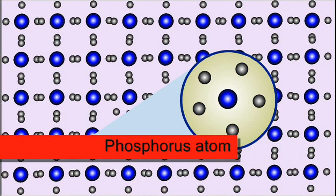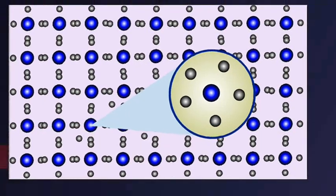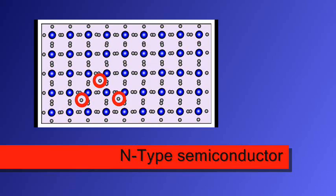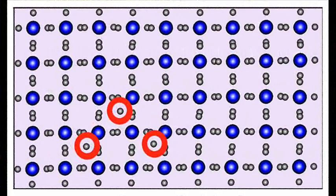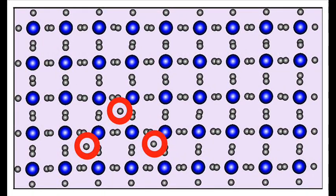Phosphorus atoms are used to make N-type semiconductor. It contains more electrons on an outermost orbit than silicon. These extra electrons are free to move around.